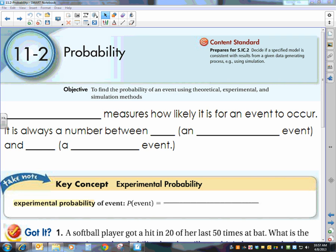Today we get to talk about probability. So probability measures how likely it is for an event to occur. It is always a number between 0 and 1.